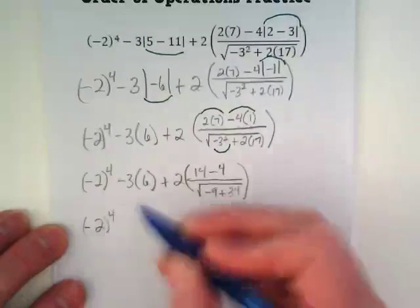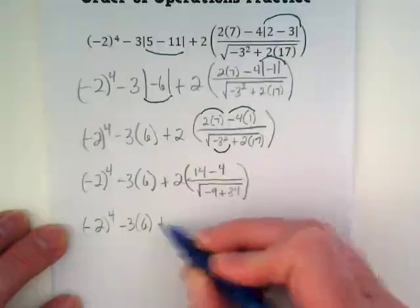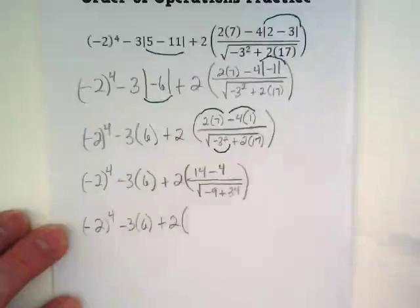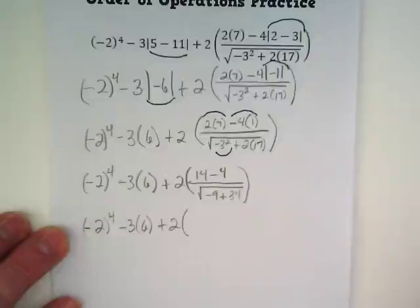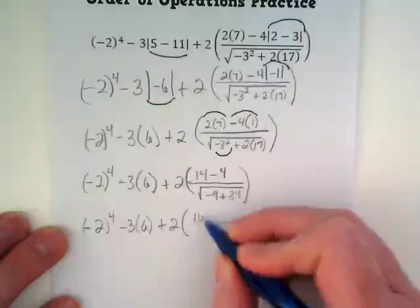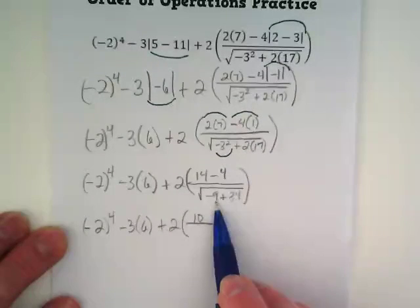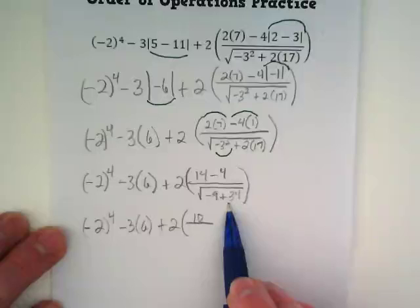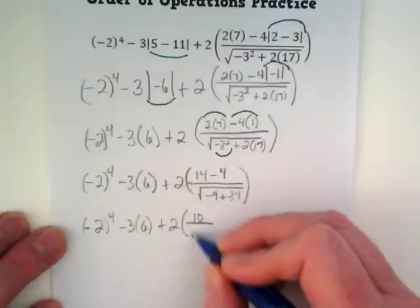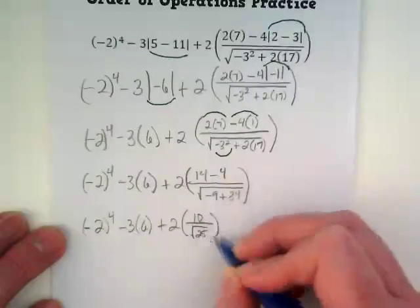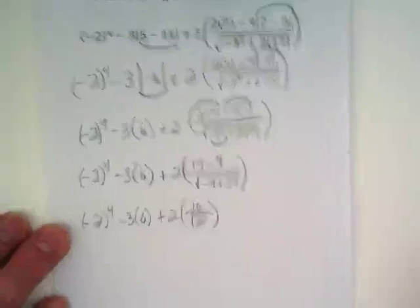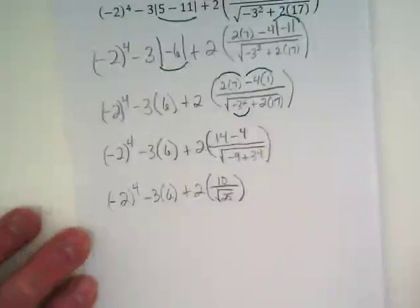Again, (-2) to the 4th power, minus 3 times 6, plus 2. And we are going to get inside that grouping symbol. What is 14 minus 4? So our numerator is 10. What is -9 plus 34? 25. So it is the square root of 25.